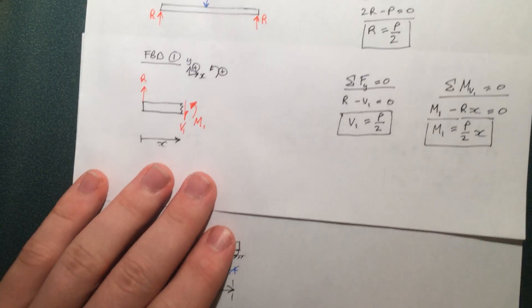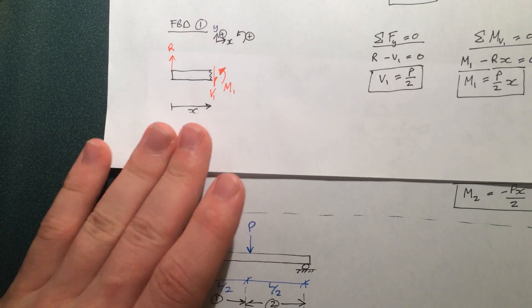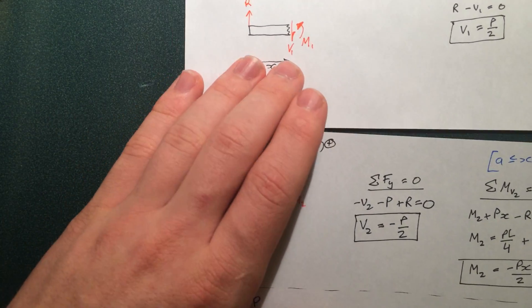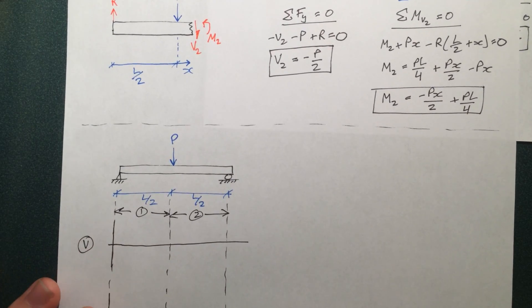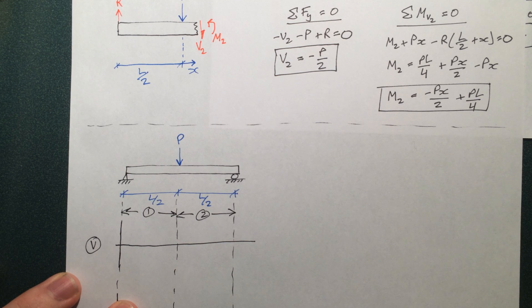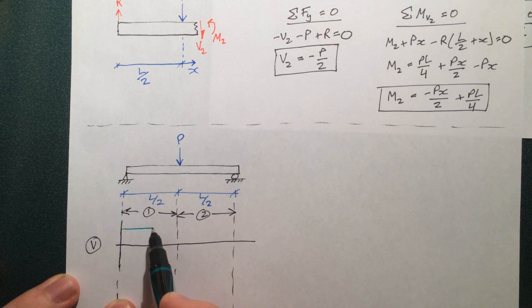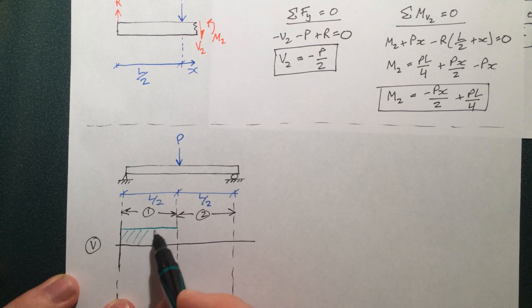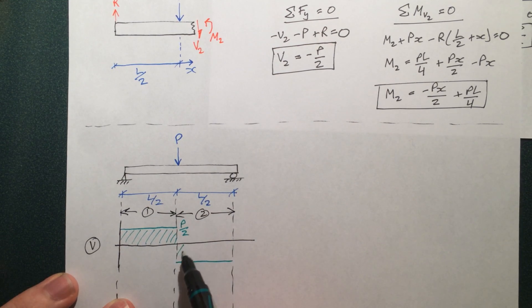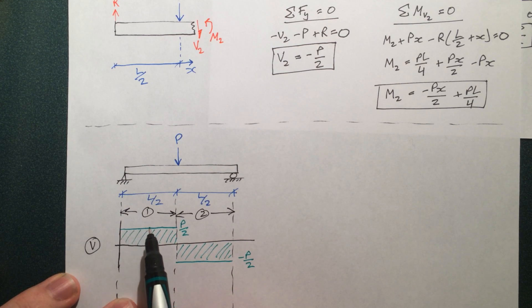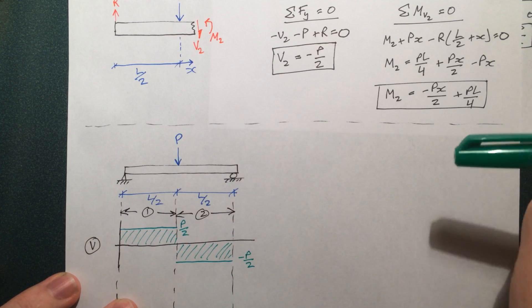So V1, that's P by 2, and V2 is negative P by 2, as you can see from right here. So let's go ahead and plot that. Just like that. So basically, it's going along at P by 2, you add P, the magnitude of this jump is P.